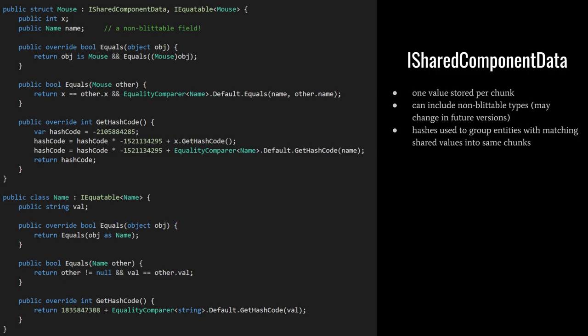Rather than implement these methods manually, we can have Visual Studio generate them for us, and these auto-generated methods are generally just fine. In this example, we have a shared component type mouse with two fields: an int x, and a name field which is a class with a string field. Note that I've generated the IEquatable interface and getHashCode methods for both types. For the name class, doing this is optional, but without it, equality and hash codes would be based on the identity of the name field, not its actual value. In some cases that might be what you want, but otherwise the name class should have these methods.